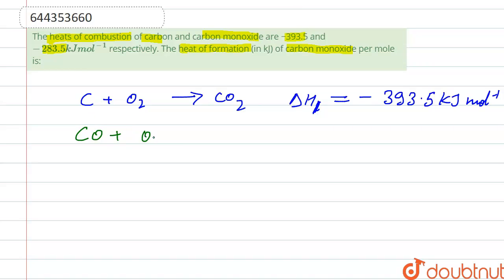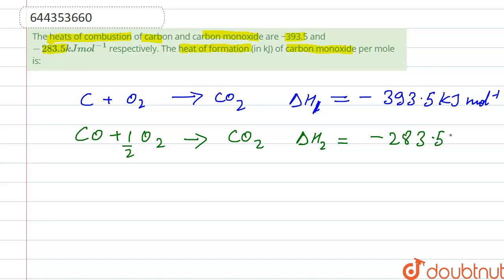The heat of combustion of carbon monoxide: CO plus half O₂ forms CO₂. We balance it with a half coefficient. The delta H2 is given as minus 283.5 kilojoule per mole. This is equation 2.